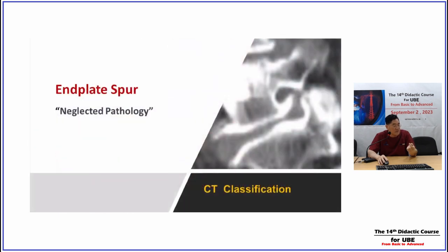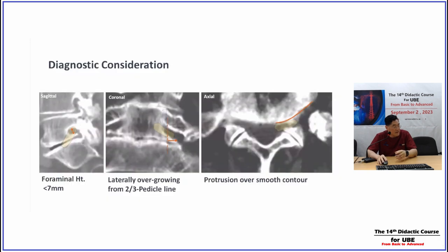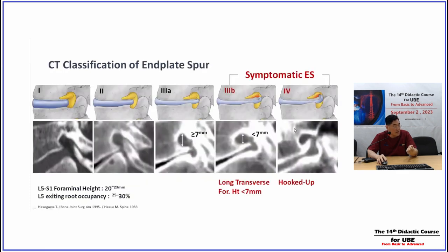The end plate spur is notorious and everybody knows it could be a pathology. But which spur is painful and which is not — there is no exact documentation yet. The end plate spur is a little different from disc rupture. The nerve root can be impinged at the pedicle, subpedicular area, and the end plate spur. On coronal view the transversely growing end plate spur is visible; on the axial view the smooth round contour is gone, the end plate spur is growing, it looks very rough and irregular. We should suspect that.